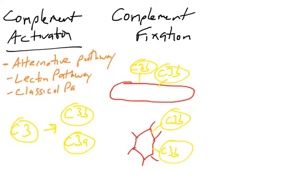The final pathway is called the classical pathway of complement activation. This could take days to weeks to activate. But once it does, again, it leads to C3 being cleaved to C3A and C3B.